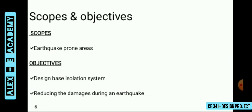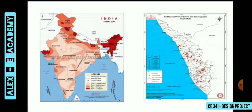Now we will discuss about the scopes and objectives of base isolation. The scope of this topic is that it would be more effective in earthquake prone areas. These are maps of India and Kerala showing earthquake intensity of particular places. In the first map, India is divided into four zones — zone 2, 3, 4, and 5. Zone 2 indicates areas with minor damage earthquakes, zone 3 indicates moderate damage, zone 4 indicates major damage, and zone 5 is the seismically most active region. There are many seismically most active regions, so in areas like zone 5 we have the scope of base isolation. In the map of Kerala, we can see many red dots indicating higher earthquake intensity in those areas. So in areas with high intensity of earthquake, we can apply base isolation.